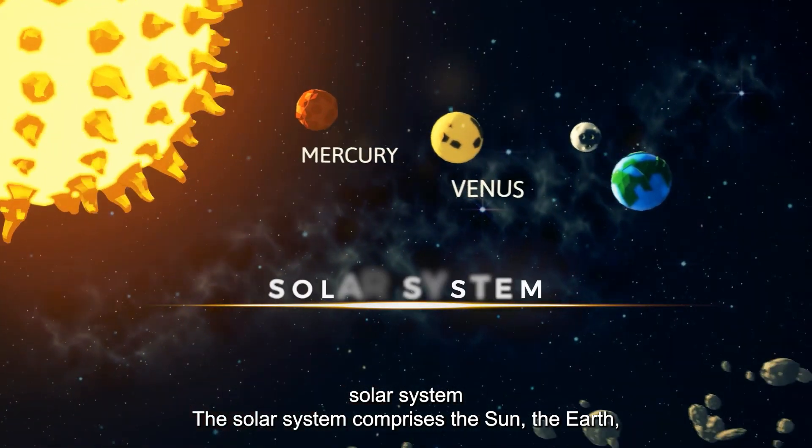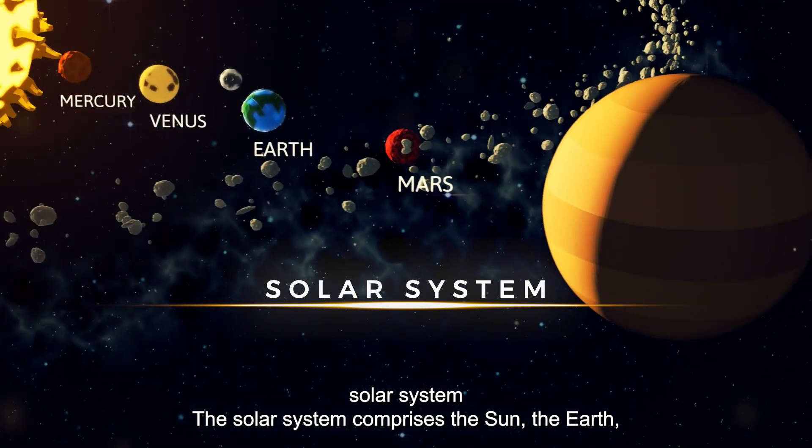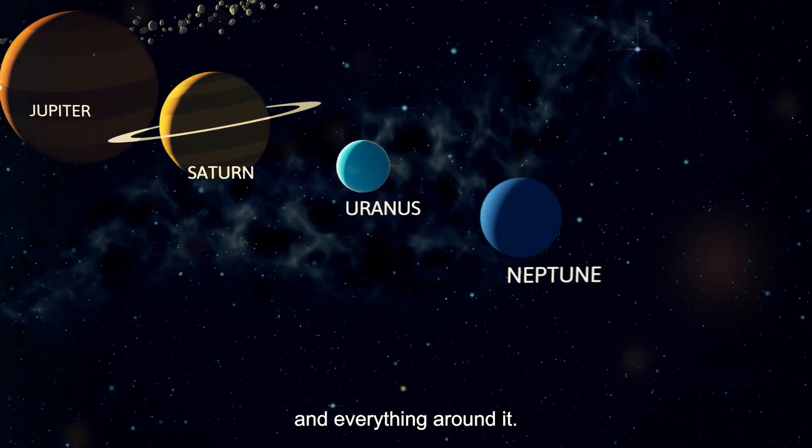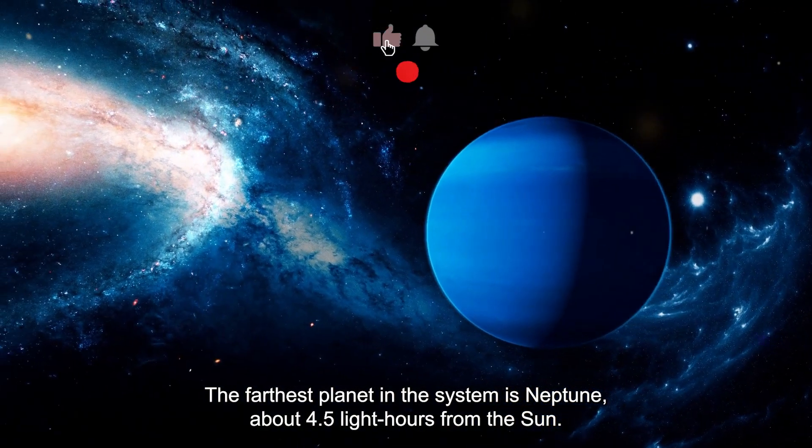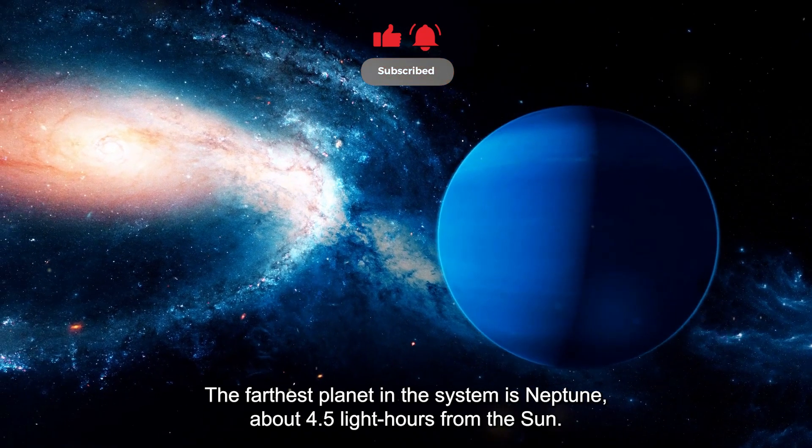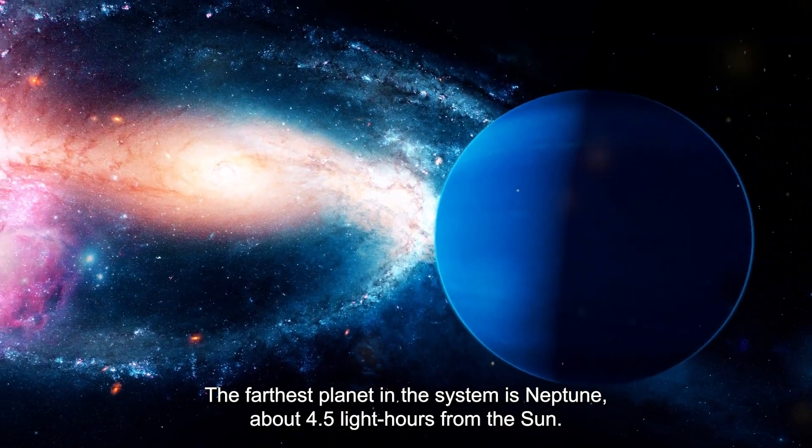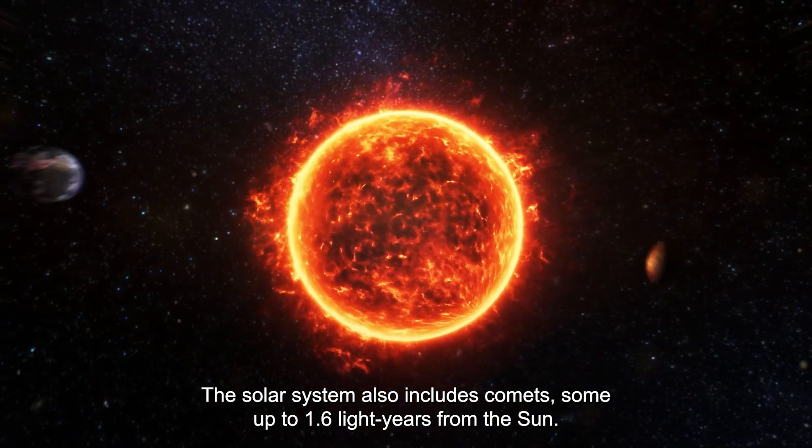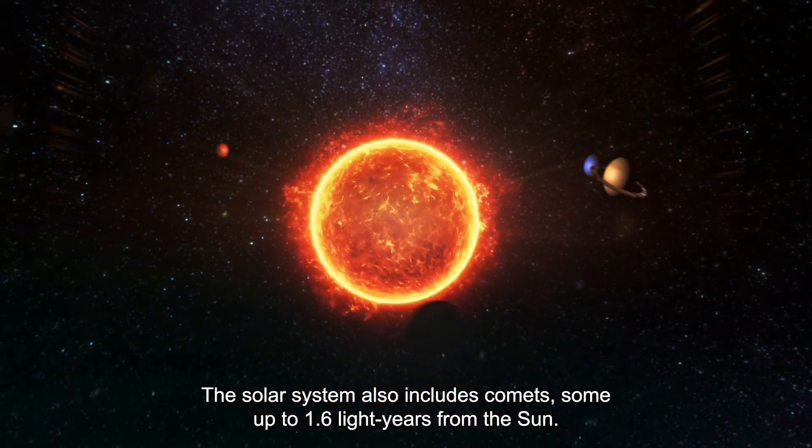Solar System. The solar system comprises the Sun, the Earth, and everything around it. The farthest planet in the system is Neptune, about 4.5 light hours from the Sun. The solar system also includes comets, some up to 1.6 light years from the Sun.